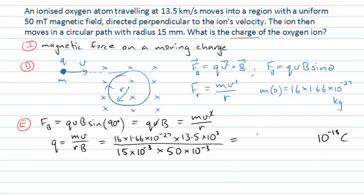So now we can just put in the numbers without the powers of 10. 16 times 1.66 times 13.5 divided by 15 times 50, and they're all numbers I can really easily pop into my calculator. And I come out with a value here when I do that calculation of 0.48 times 10 to the minus 18 coulombs.